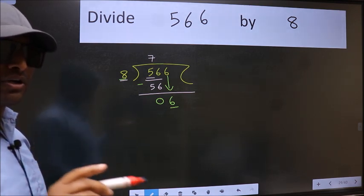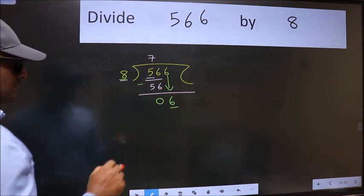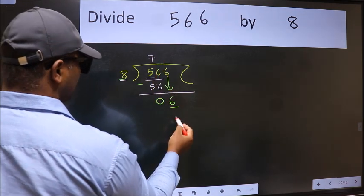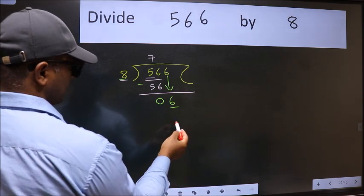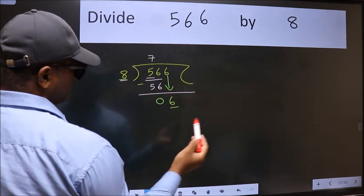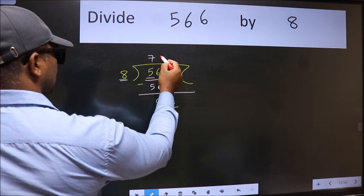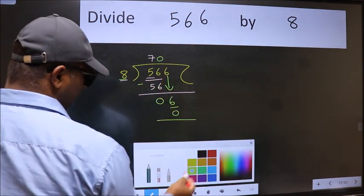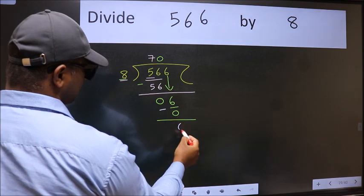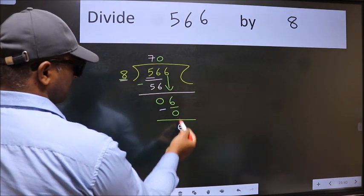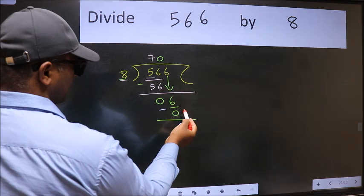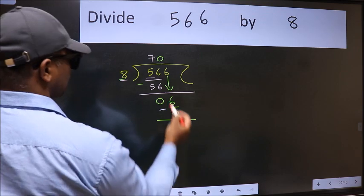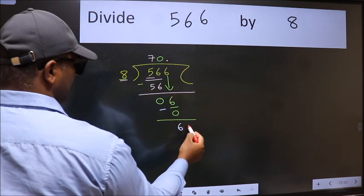Instead of that, what we should think of doing is: which number should we take here? If I take 1, we will get 8, but 8 is larger than 6. So what we do is we take 0. 8 into 0 is 0. Now we subtract — we get 6. Over here, we did not bring any number down, and 6 is smaller than 8, so now we can put a dot and take 0.